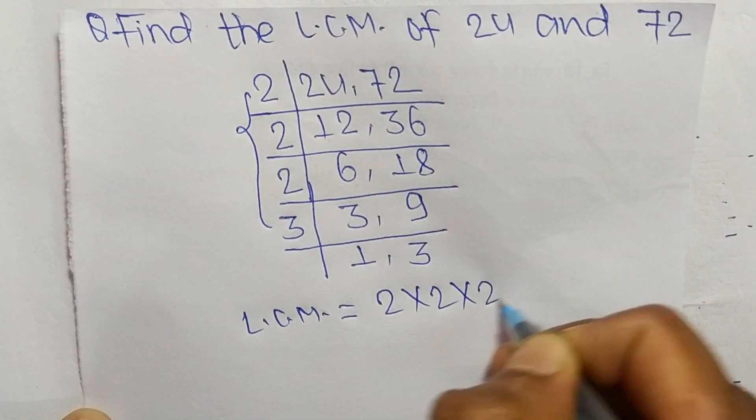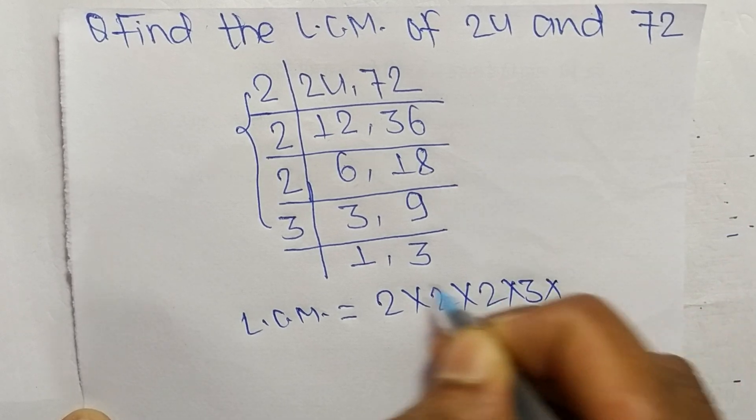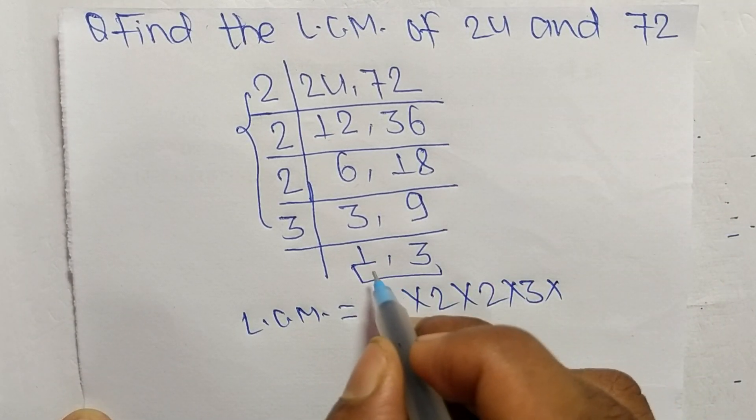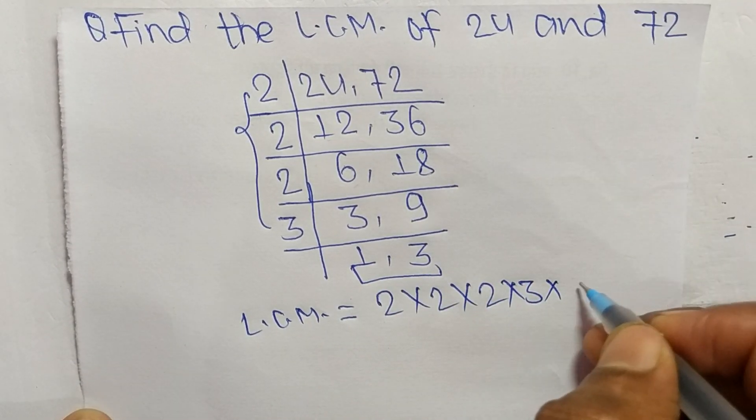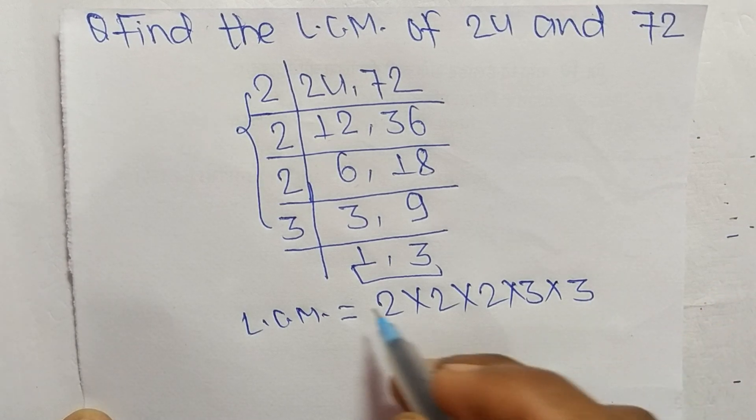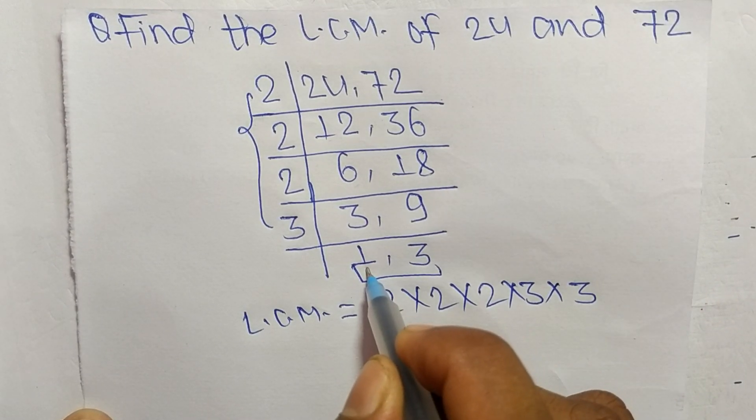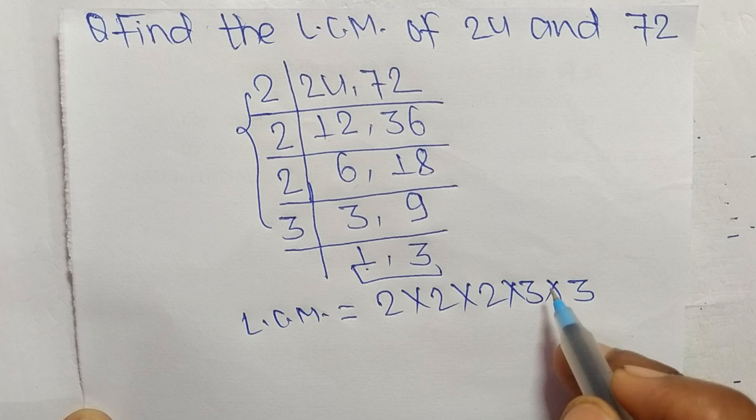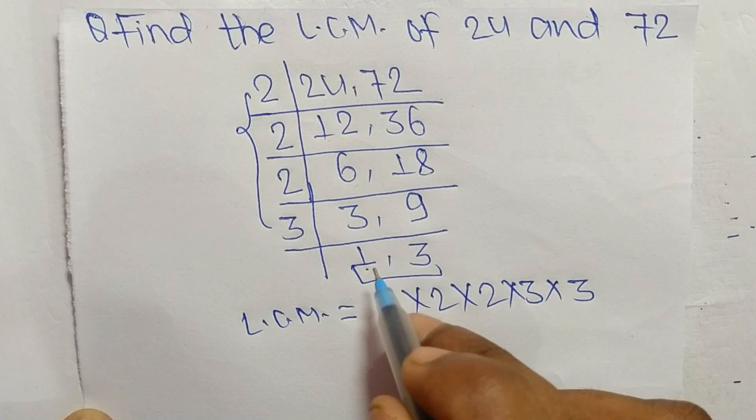And from this part we have 1 and 3 and we take here only 3 and we neglect 1 because by multiplying any number with 1 we get the same result. So we don't take here 1.